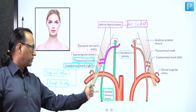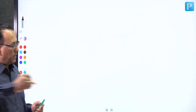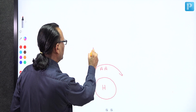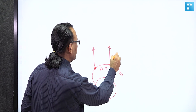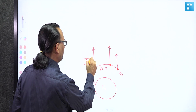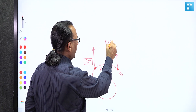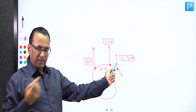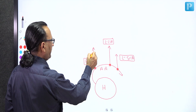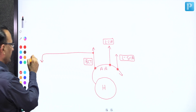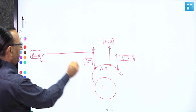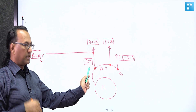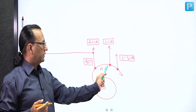Let us draw this diagram ourselves. Starting with the heart giving us the arch of the aorta, the arch of aorta gives three branches: the brachiocephalic trunk (first branch), the left-sided common carotid artery (second branch), and the left-sided subclavian artery (third branch). The right-sided subclavian artery comes from the brachiocephalic trunk, which divides into the right subclavian artery and the right common carotid artery. The left common carotid artery comes directly from the arch of aorta.